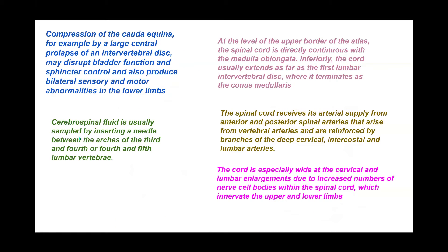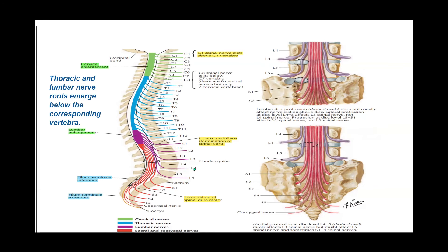Cerebrospinal fluid is sampled by inserting a needle between the arches of the third and fourth, or fourth and fifth lumbar vertebrae. For a spinal tap or subarachnoid tap, you place the needle between L3 and L4 — staying well away from the conus medullaris — or sometimes at L4-L5, far from the spinal cord.